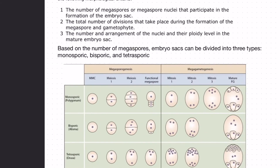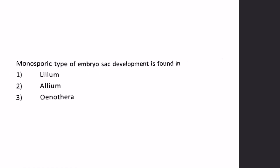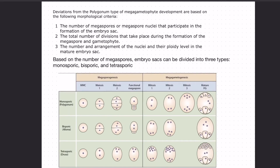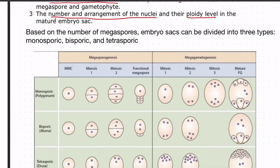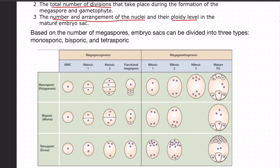What is monosporic type of embryo sac? Embryo sac development can be of 3 types: monosporic, bisporic, and tetrasporic. Megagametophyte development differs based on the number of megaspores or megaspore nuclei participating in formation, the total number of divisions, and the number and arrangement of nuclei and their ploidy level in the mature embryo sac. In monosporic, the functional megaspore is 1; in bisporic, it is 2; in tetrasporic, it is 4.